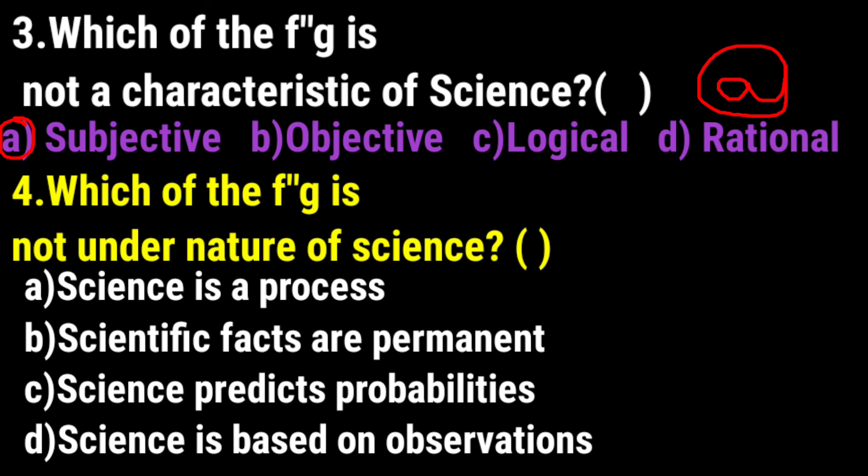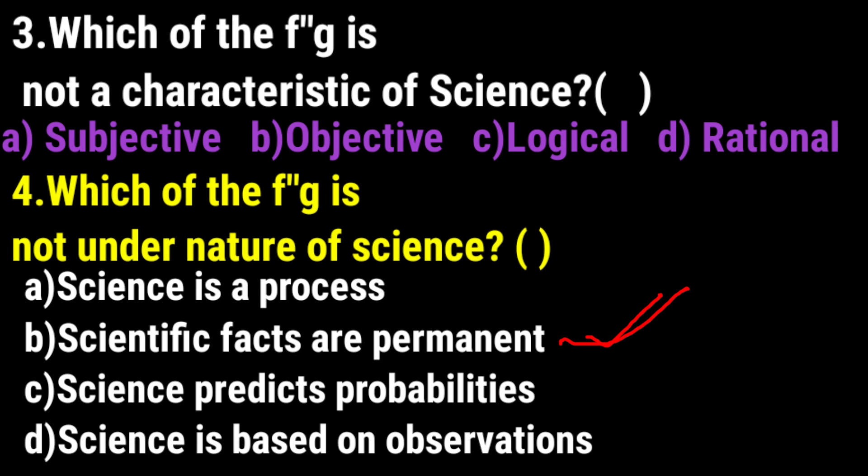Which of the following is not under the nature of science? Options: Science is a process; scientific facts are permanent; science predicts probabilities; science is based on observations. The answer is Option B — scientific facts are not permanent, they are tentative.